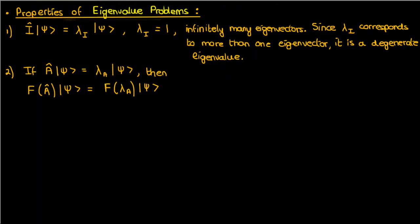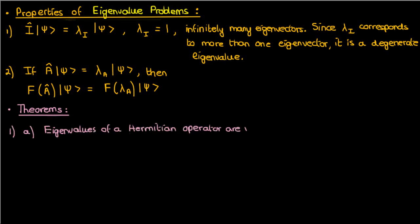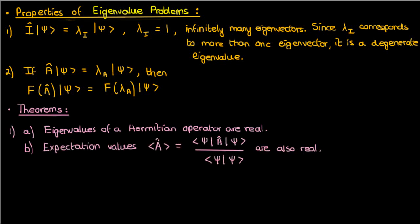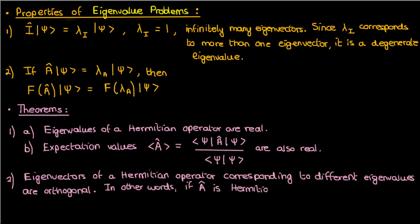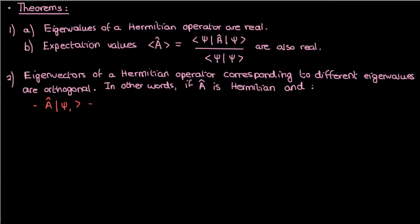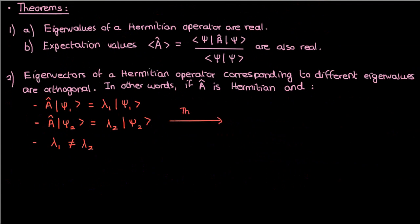Now let's talk about some theorems involving eigenvalues and eigenvectors. The first theorem states that the eigenvalues of a Hermitian operator are real, and their expectation values are also real. The second theorem states that the eigenvectors corresponding to different eigenvalues of a Hermitian operator are orthogonal. In other words, if lambda_1 and lambda_2 were distinct eigenvalues of a Hermitian operator A, whose corresponding eigenvectors were psi_1 and psi_2 respectively, then the inner product of psi_1 and psi_2 is zero.